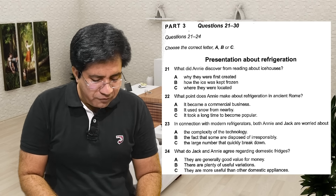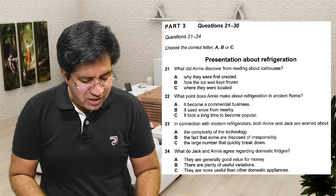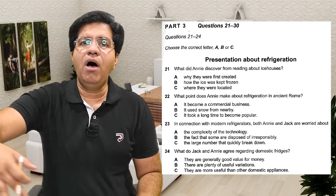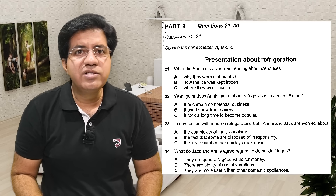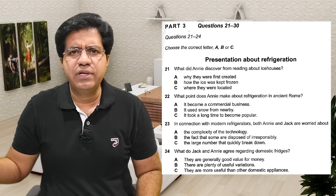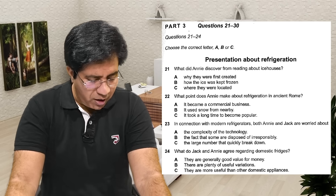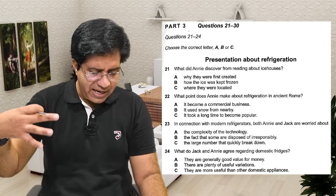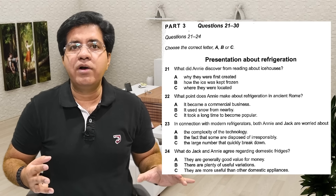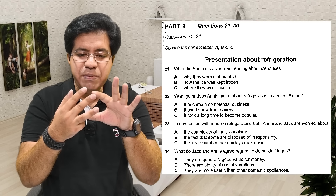Option B: 'It used snow from nearby' — refrigeration in ancient Rome used snow from nearby. If the audio says they had to bring snow from long distances, that's the opposite of 'nearby,' so it's not the answer. Option C: 'It took a long time to become popular.' In the audio they will discuss all three options — some positively, some negatively. The order can be C, A, B or A, C, B or B, C, A — so identify which option is being discussed and whether it's the right answer or a trap.